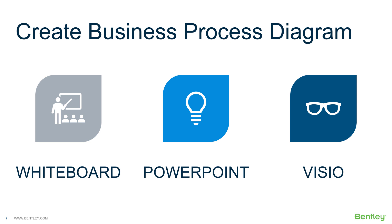After gathering the requirements, you would work with the stakeholder to create a rough process diagram. This can be done during the requirements gathering workshop. I usually start by drawing up a concept with a stakeholder on a physical or virtual whiteboard. You can then use PowerPoint, Visio, or other applications to create a more formal diagram with swimlanes. For more information on how to create a business process diagram, see guided pathways on popular learning platforms such as LinkedIn and degreed.com.